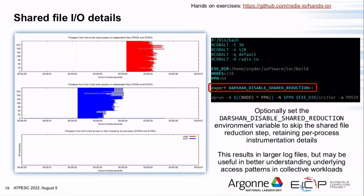You can disable that shared reduction step by setting the DARSHAN_DISABLE_SHARED_REDUCTION environment variable. This skips the reduction and lets you retain all per-process details, which can be very useful depending on what you're trying to figure out.